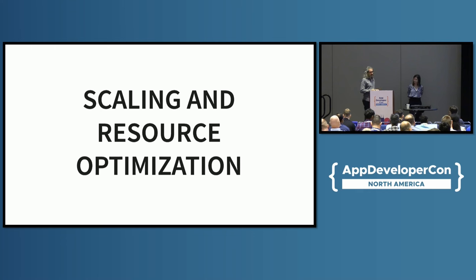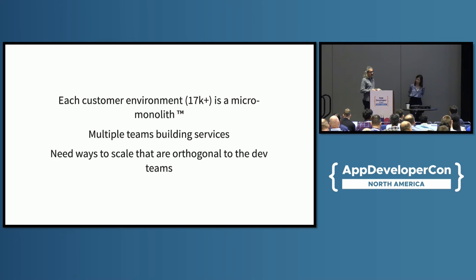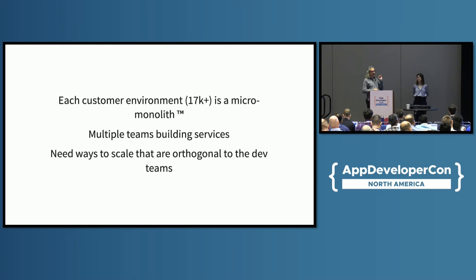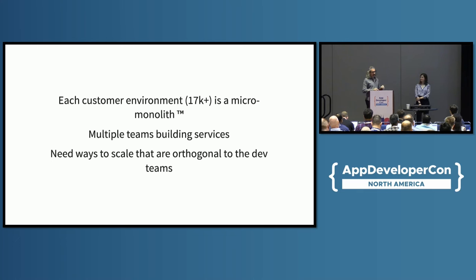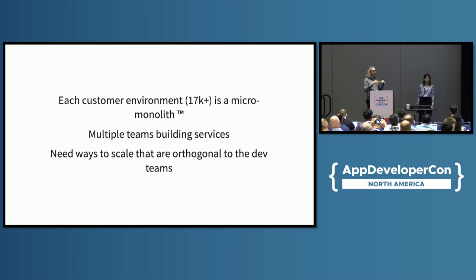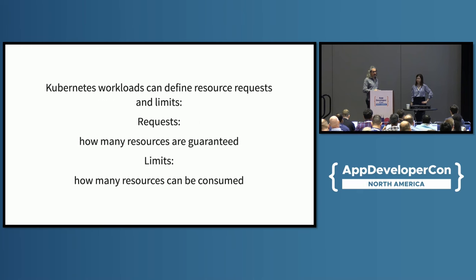On the scaling and resource optimization side — this is a micro monolith, as we like to call it. We have more than 17,000 of these environments. Because we have multiple teams building services, we are looking for ways to scale that are orthogonal, so each service doesn't need to be aware of very specific things — we can apply optimizations across the whole fleet of clusters.